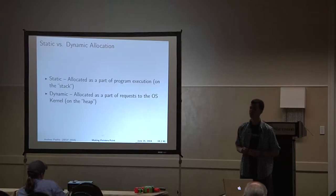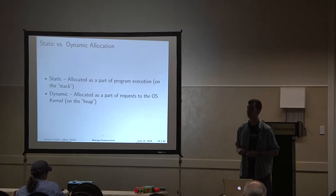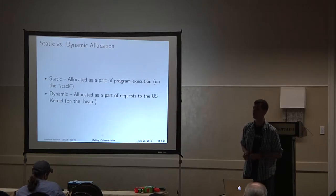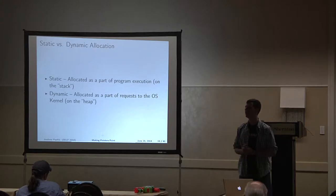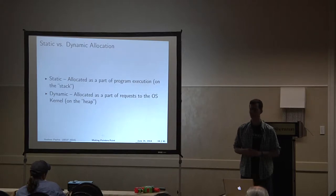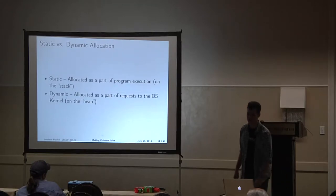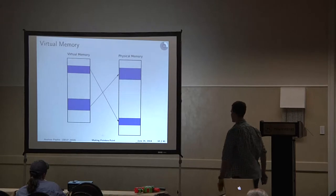You could ask the kernel for 16 bytes of space using a function call. It either gives you back 16 bytes of space, or it says it does not have 16 bytes of space available and will return a value indicating that is the case — in this case, the value zero.